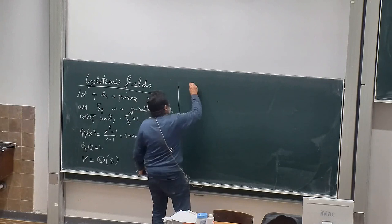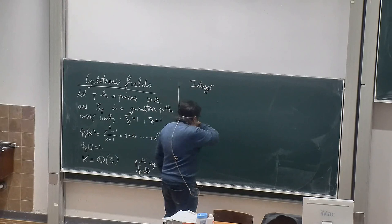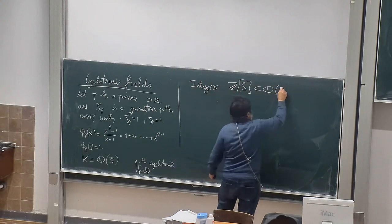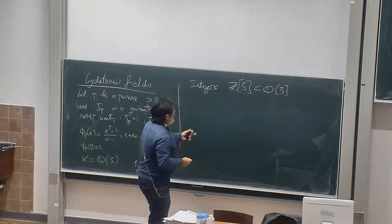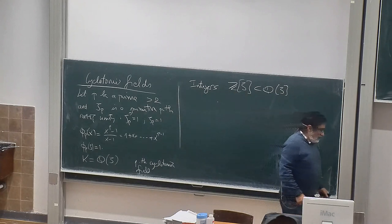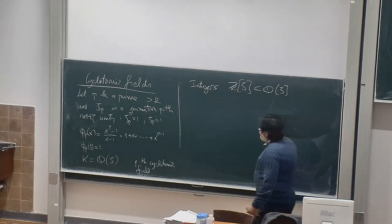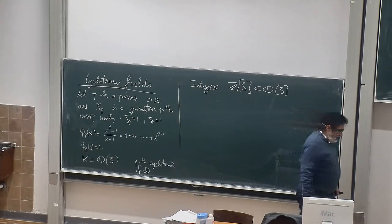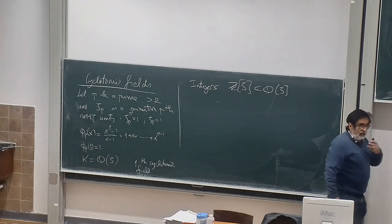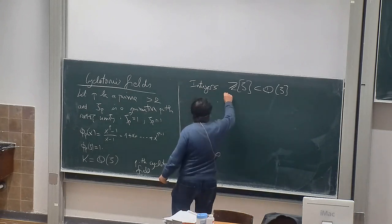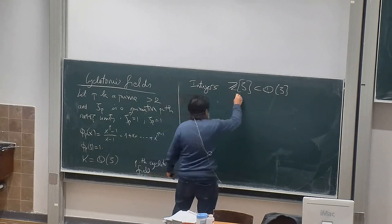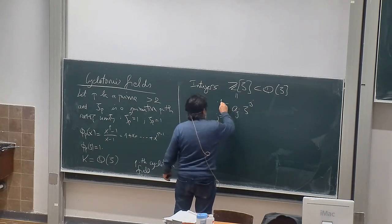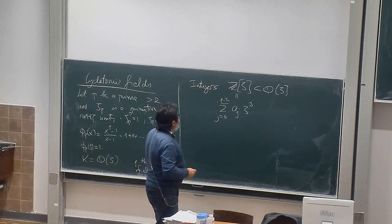There are algebraic integers in this field. These are the rational integers used as coefficients for polynomial expressions in zeta. In general, algebraic integers are algebraic numbers that are roots of polynomials with coefficients in Z and with leading coefficient one. In this case we have a theorem that the algebraic integers are exactly the numbers that can be written as a sum of a_j times zeta^j from j equals 0 to p minus 2, since the cyclotomic polynomial has degree p minus 1.